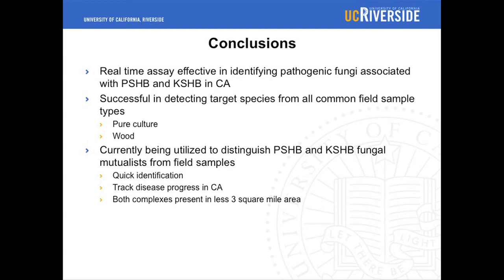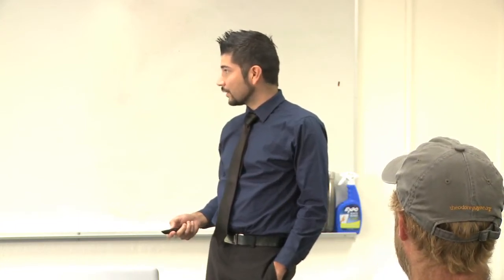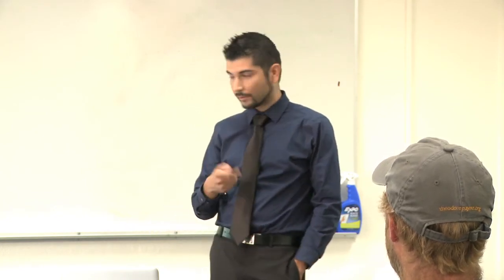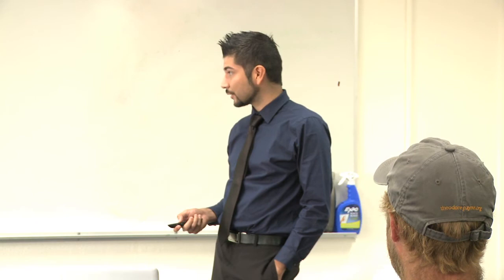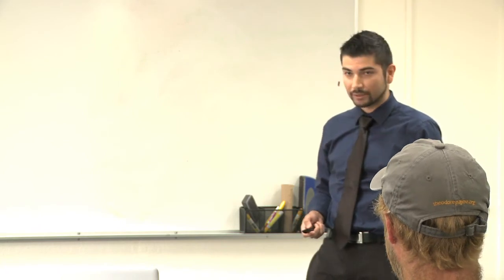Some conclusions: this real-time assay is effective in identifying pathogenic fungi associated with both beetle species in California. It was successful in detecting target species from all common field sample types — from pure culture and wood. We're also able to detect it from a single beetle head. It's currently being utilized to distinguish both beetles from field samples in Akif Eskalen's lab. This allows for quick identification since we can detect it from the wood, and it allows us to track disease progress in California and show that both beetles are present in very close areas.